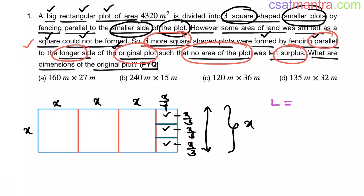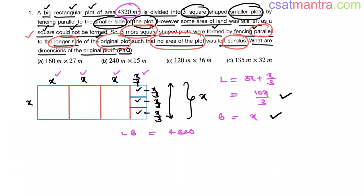Now the length of this rectangular plot is 3x plus x by 3. x plus x plus x plus x by 3 is 3x plus x by 3. Now this is equal to 10x by 3. Now breadth is x. Here area of this plot is given, 4320. What is the area formula of rectangle? Length into breadth. That is equal to 4320. Now substituting the length and breadth values in this equation: length is 10x by 3, breadth is x. This is equal to 4320.